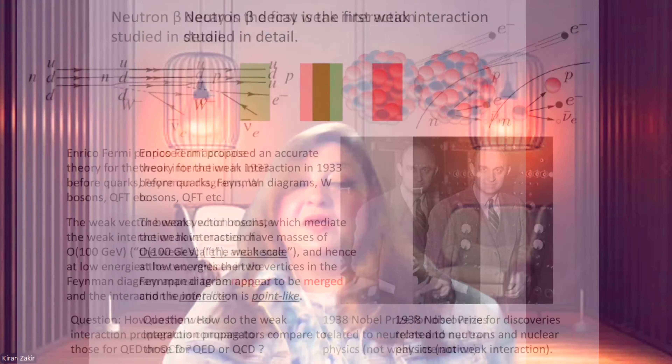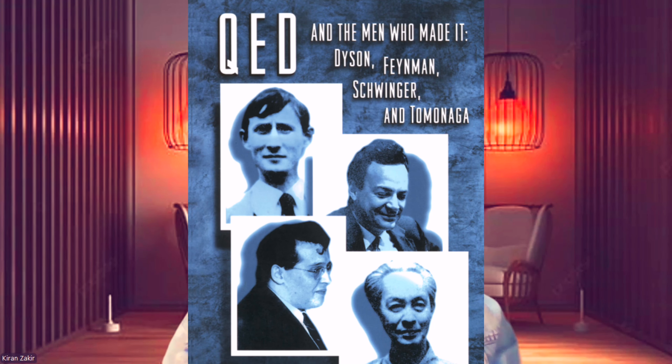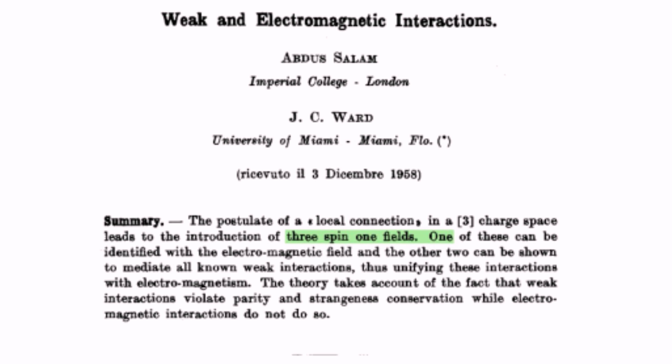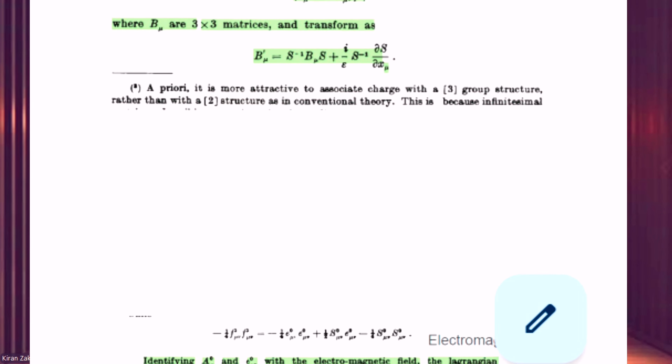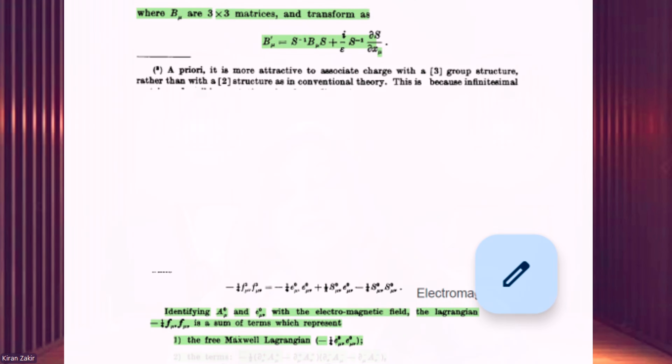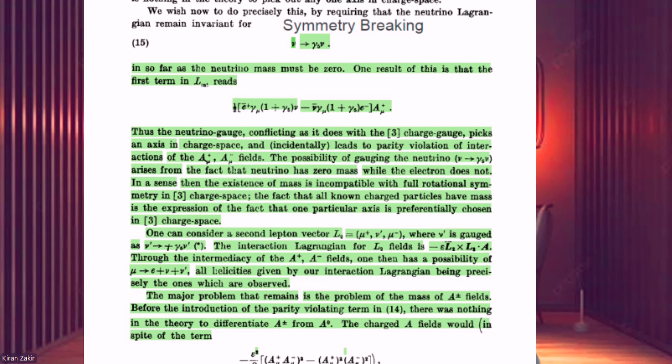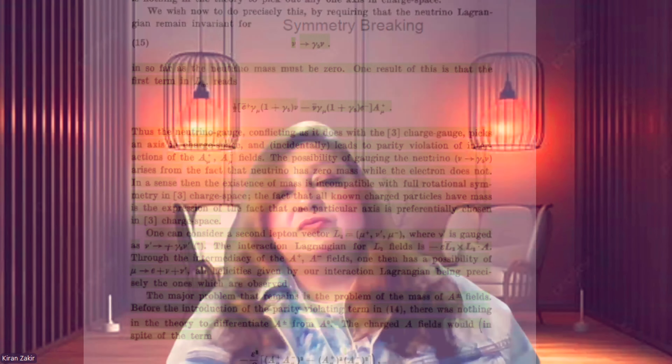Other key contributors include Julian Schwinger, Richard Feynman, and Tomonaga Shin'ichirō, who developed QED. Salam and Ward's 1959 paper was significant because it introduced novel ideas about gauge invariance and symmetry principles in the context of weak interactions. Their work highlighted the potential for unifying weak and electromagnetic interactions, providing conceptual and mathematical tools that were crucial for later developments.